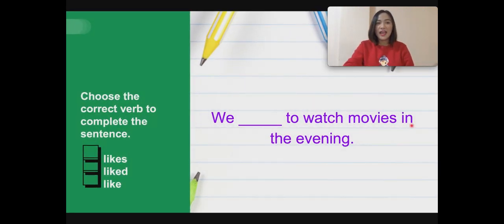Okay, this time I want you to choose the correct verb to complete the sentence. Let's look at the sentence. We blank to watch movies in the evening. We blank to watch movies in the evening. Now, what verb do we need to complete this sentence? Is it likes, liked, or like?